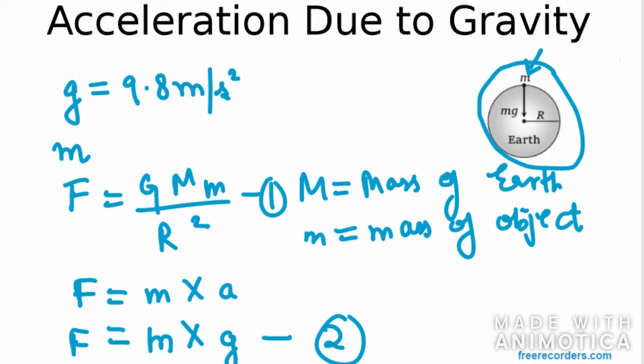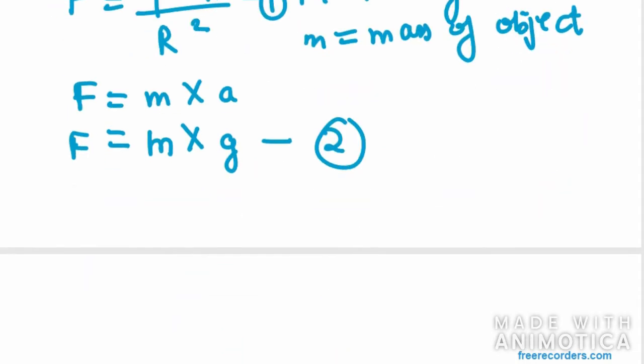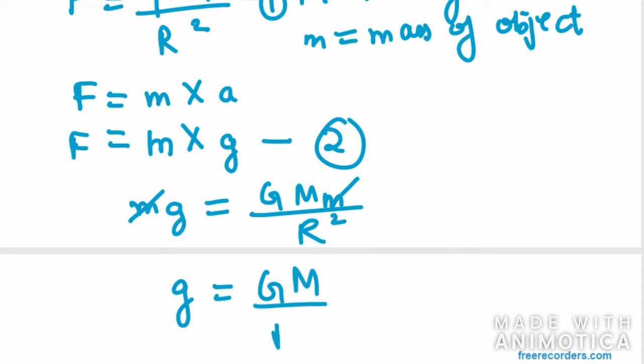We need to compare these two equations 1 and 2. When we compare, we cancel out force from the left-hand side. So it will be m g equals G M m over R squared. You can cancel out small m with m. So you are left with g equals the universal gravitation constant, that is big G times M over R squared.